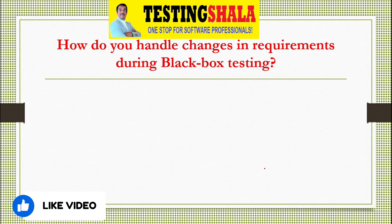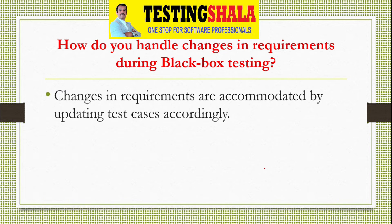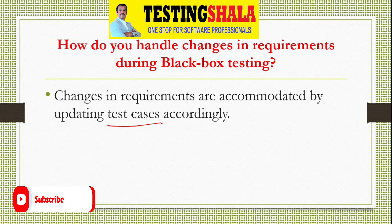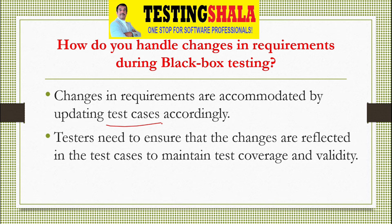The next question is: how do you handle changes in requirements during black box testing? Changes are handled in any form of testing by keeping your test cases updated accordingly. If the requirements are approved in the change control board or in the agile sprint board, we should accommodate those changes in our test cases so they can run in the next cycle. Testers need to ensure the changes are reflected in the test cases to maintain overall test coverage and validity.